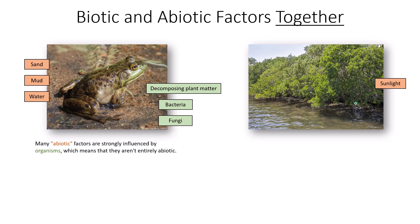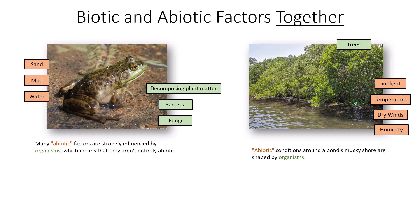Zooming out to the right image, we see more abiotic and biotic factors: sunlight, temperature, and dry winds are abiotic, while trees are alive and biotic. Humidity is also an abiotic factor. It's important to note that trees — as biotic factors — influence abiotic conditions: whether they provide shade, a canopy, or a wind block shapes the humidity around a pond's mucky shore.